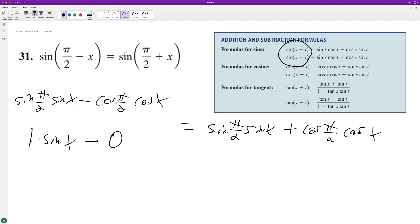0 times cosine of x, which equals 1 times sine of x plus 0 times cosine of x. So it becomes sine of x equals sine of